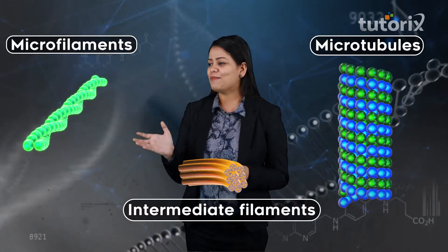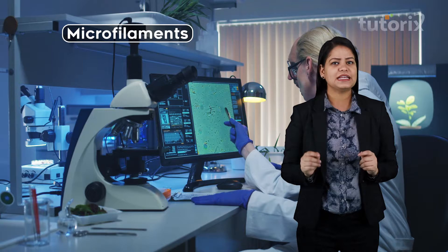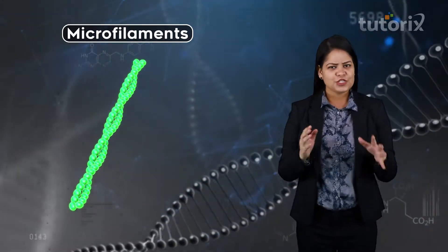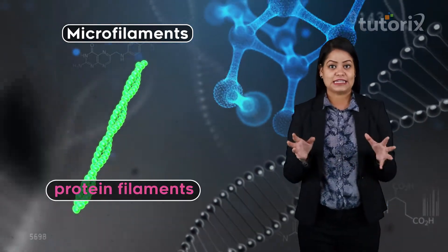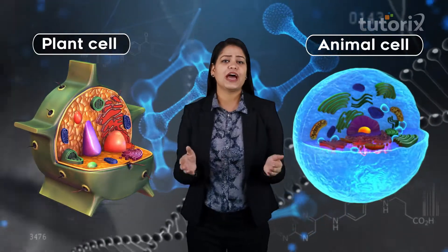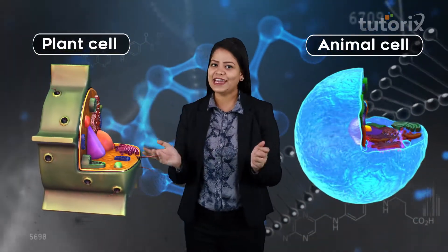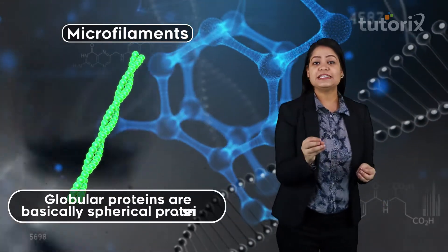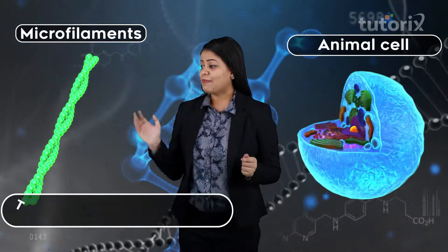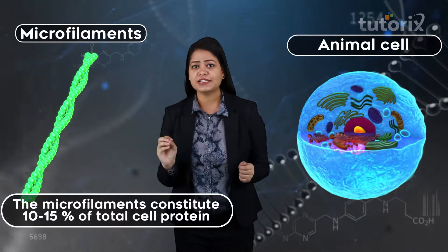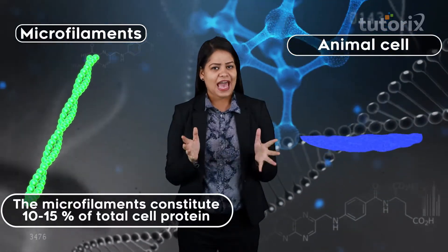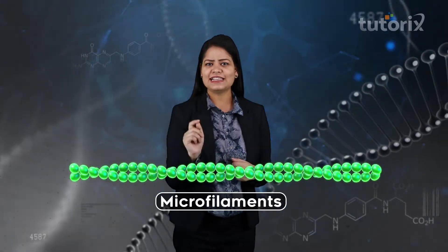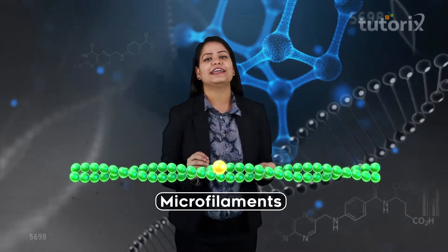Microfilaments are ultra-microscopic, long, narrow, and cylindrical rods simply made up of proteins — so we can also call them protein filaments. These protein filaments are found in all eukaryotic cells: all plant cells and all animal cells. They are made up of a globular protein called actin — a globular protein is basically a spherical-shaped protein. Microfilaments constitute 10 to 15 percent of the total protein content of a cell and are about six to eight nanometers in thickness.